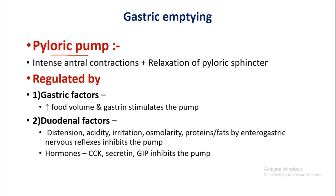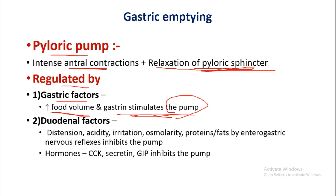Once mixing is complete, gastric emptying begins via the pyloric pump. There will be intense antral contractions plus relaxation of the pyloric sphincter, allowing food to enter the duodenum. The pyloric pump is regulated by gastric factors: increased food volume and gastrin stimulate the pyloric pump, so larger quantities of food result in faster gastric emptying.